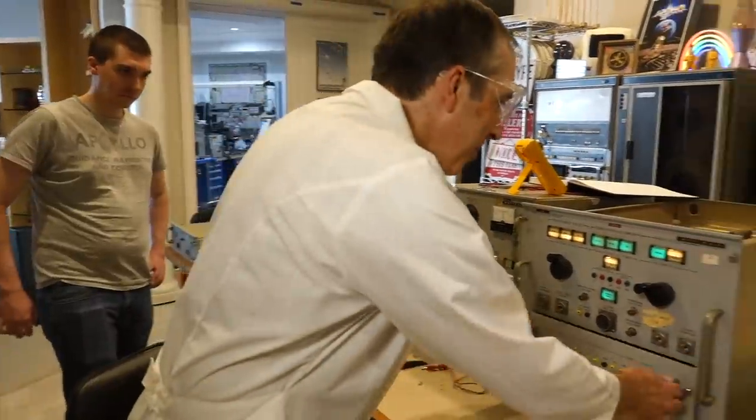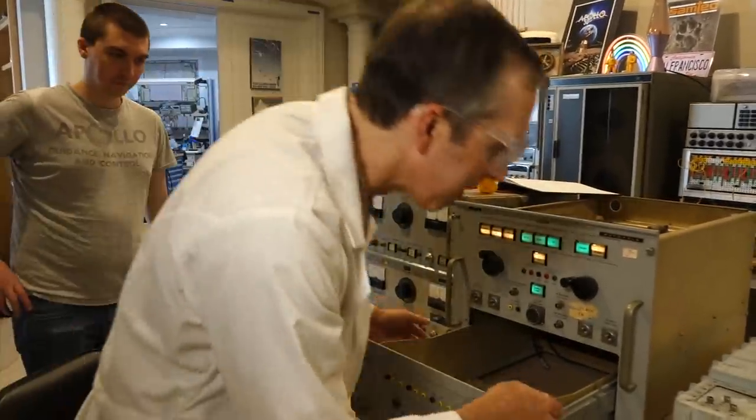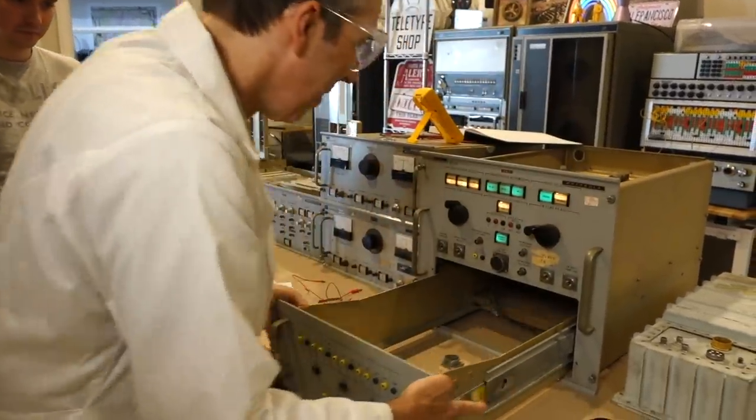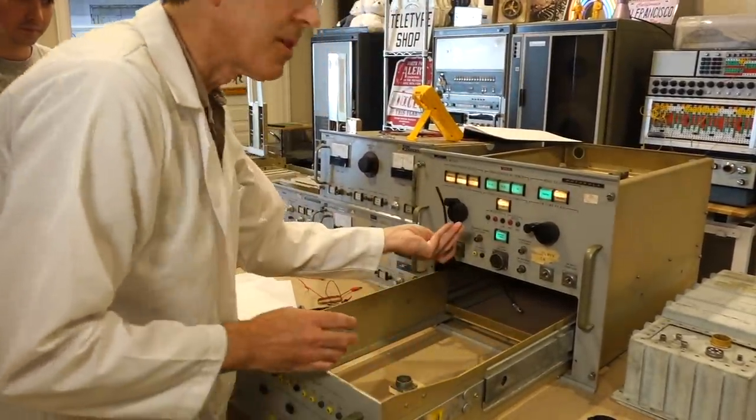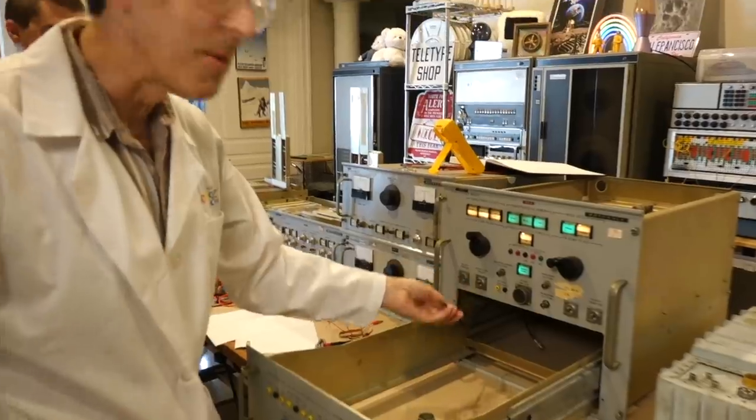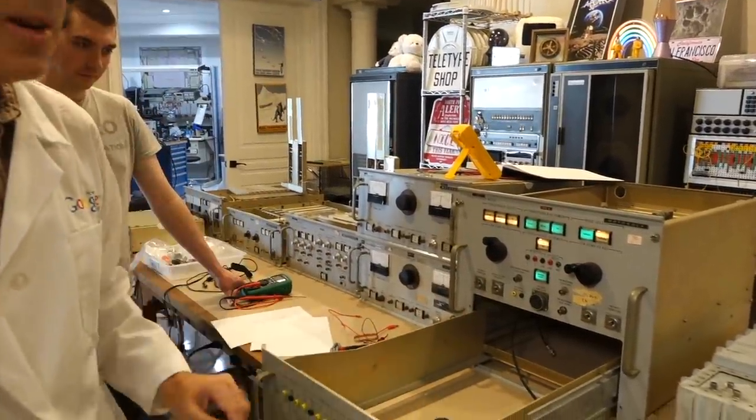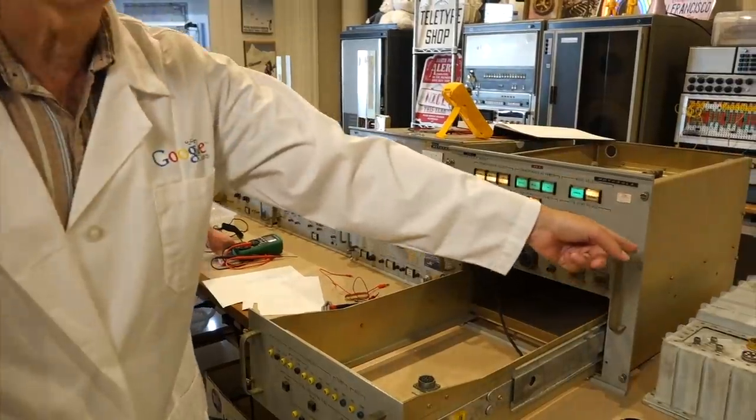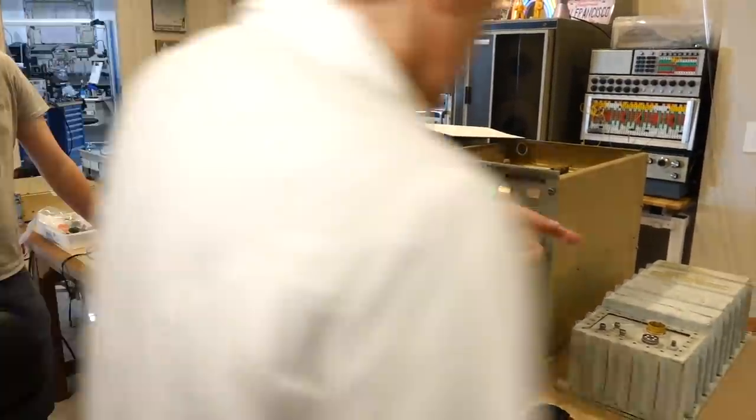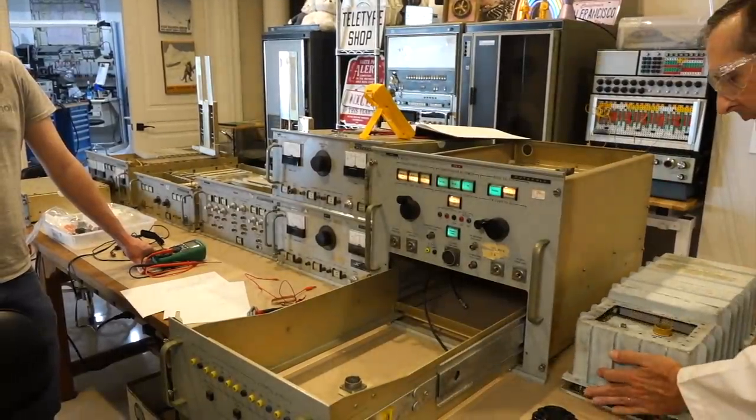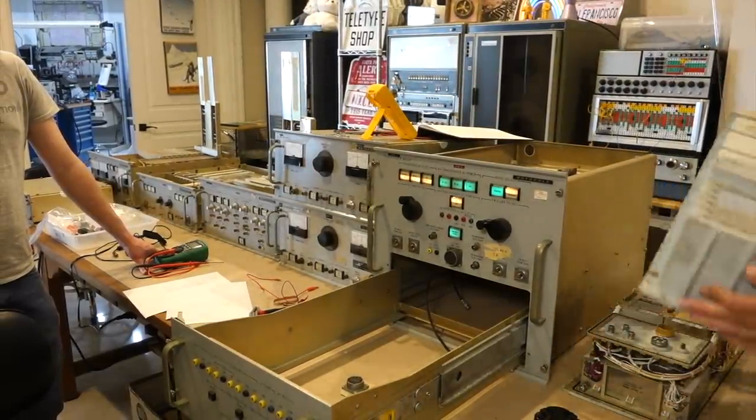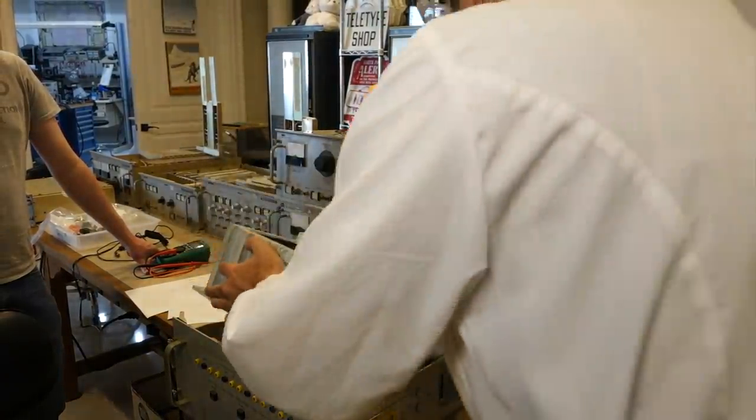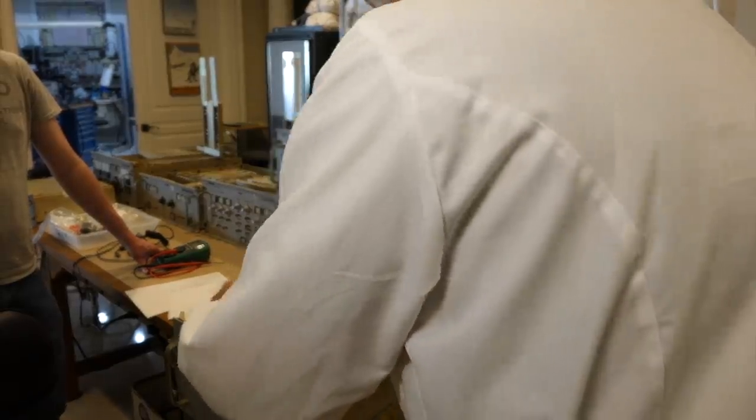So one of the puzzles was this drawer here, which is empty except for some cut-off coaxial cables going into it. It also has a mystery connector here. But what we figured out is that the transponder fits in there nicely. I'll just move the case instead of moving the whole transponder.